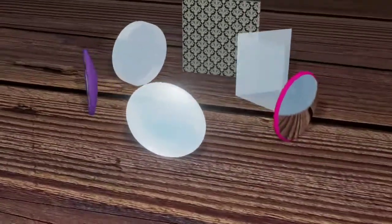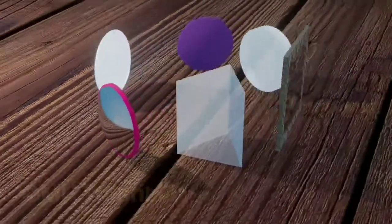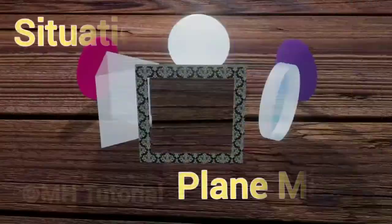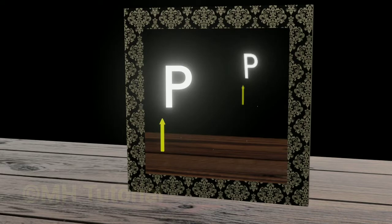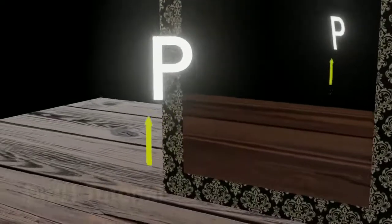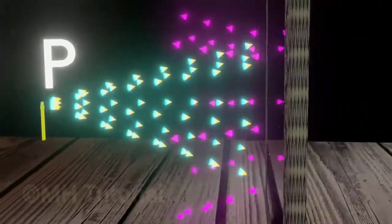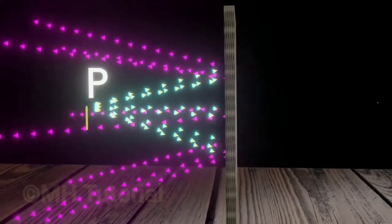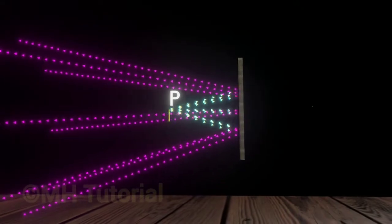Here we will show you the optical paths of rays about the devices through 3D animations. First, let us have a plane mirror. Let P be the point on the top of this yellow arrow object. From the point P, rays of light are spreading all around. Some of the rays will be directed towards the plane mirror and will come back again after reflection. Different color particles are used to indicate the incident rays and the reflected rays separately.